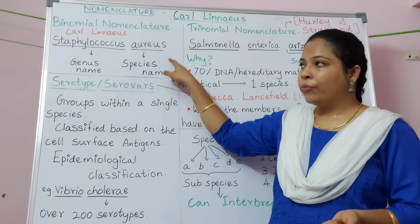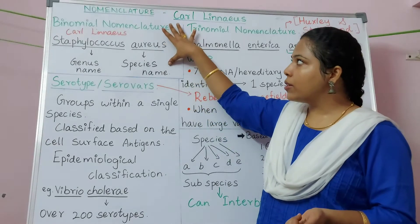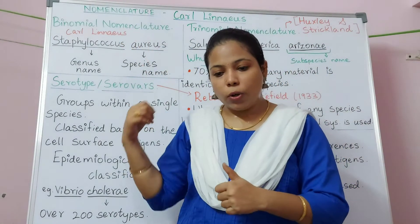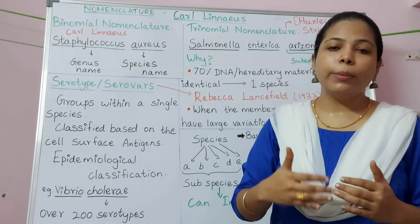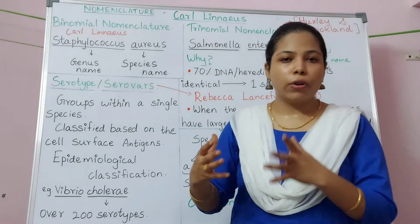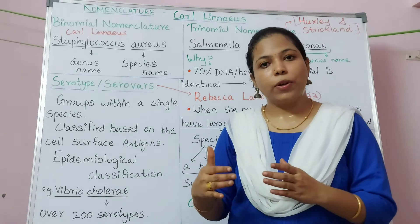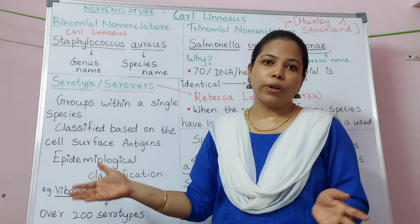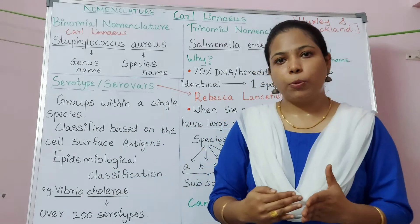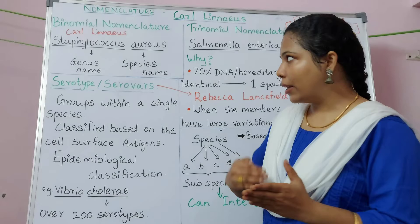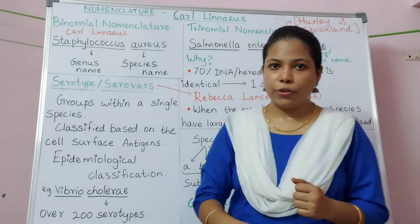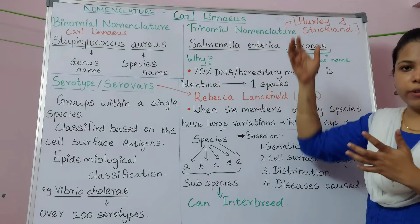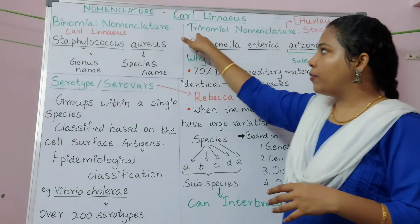Aureus is the species name. This system was discovered by Sir Carl Linnaeus. He developed this system because he had a problem identifying organisms by name, as every organism was known by a different name in different locations. In order to overcome this problem, he created binomial nomenclature. Later, trinomial nomenclature came into existence.